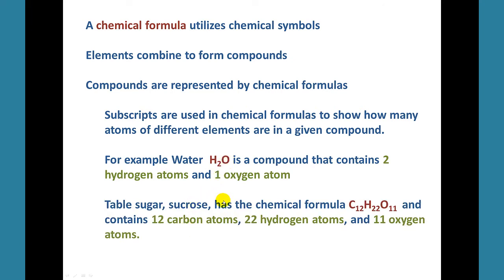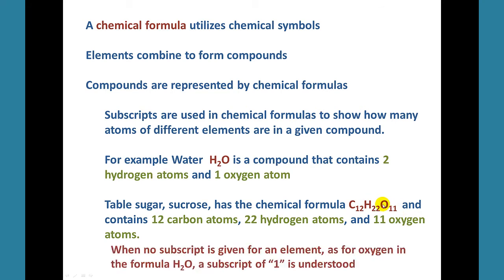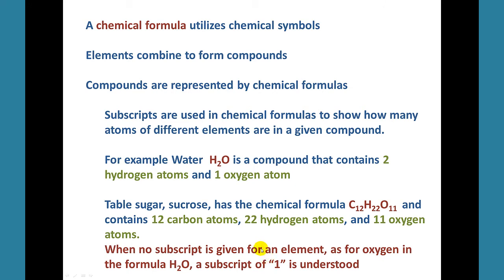Let's take a look at another chemical formula. This is the chemical formula for sucrose, or just plain old table sugar. Notice we have 12 carbon atoms, 22 hydrogen atoms, and 11 oxygen atoms. If no subscript is given for an element — just like the oxygen in the formula for water — a subscript of one is understood; we just don't write it out.